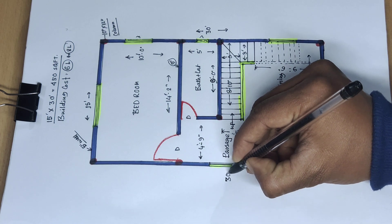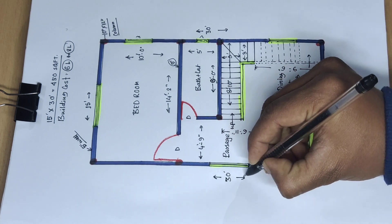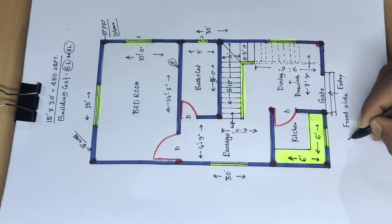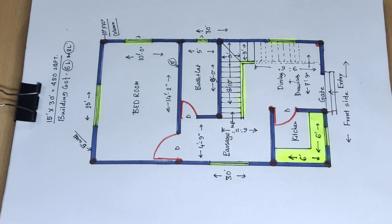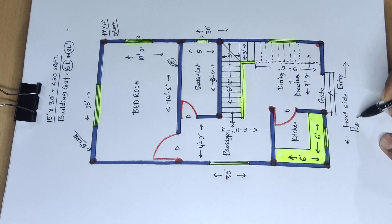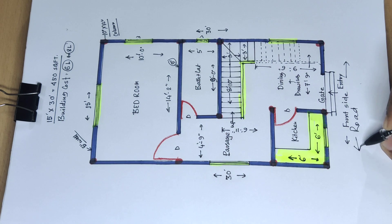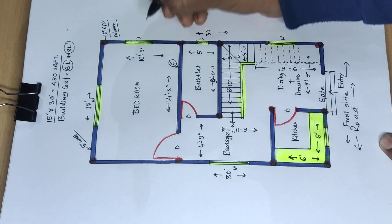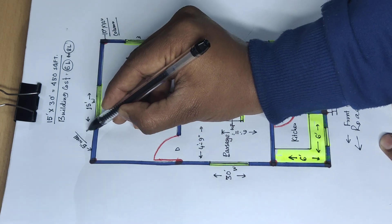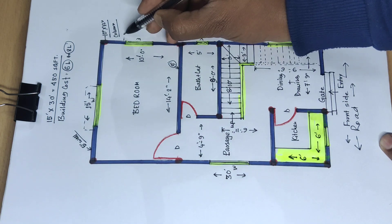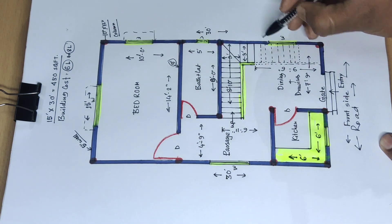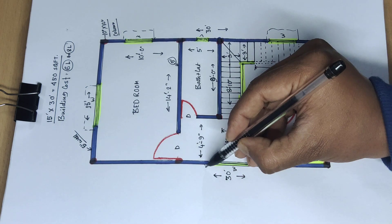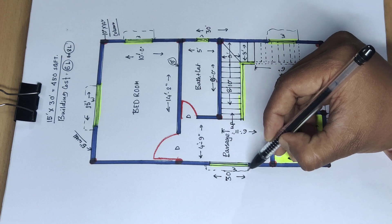This side 30 feet and this side front side and road. This is window, window and window and ventilation. This is charger and this is charger.